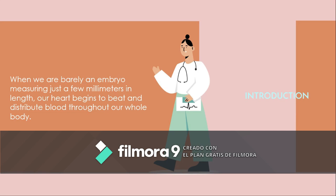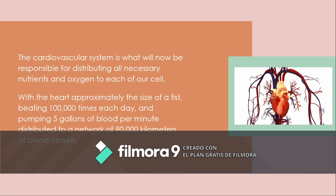When we are barely an embryo, measuring just a few millimeters in length, our heart begins to beat and distribute blood through our whole body. The cardiovascular system is responsible for distributing all necessary nutrients and oxygen to each of our cells, with the heart approximately the size of a fist, beating 100,000 times each day and pumping 5 gallons of blood per minute, distributed to a network of 90,000 kilometers of blood vessels.